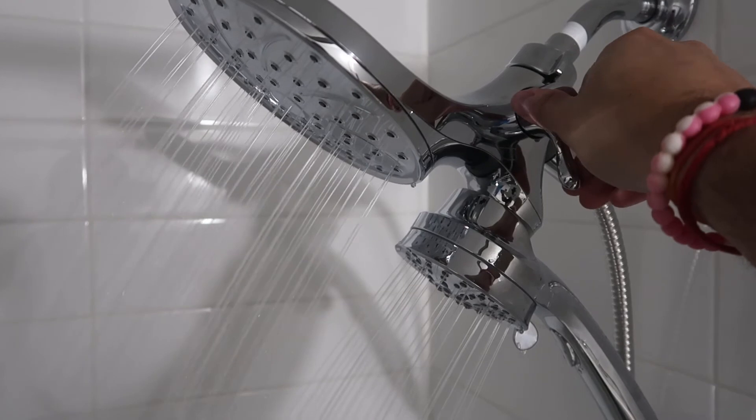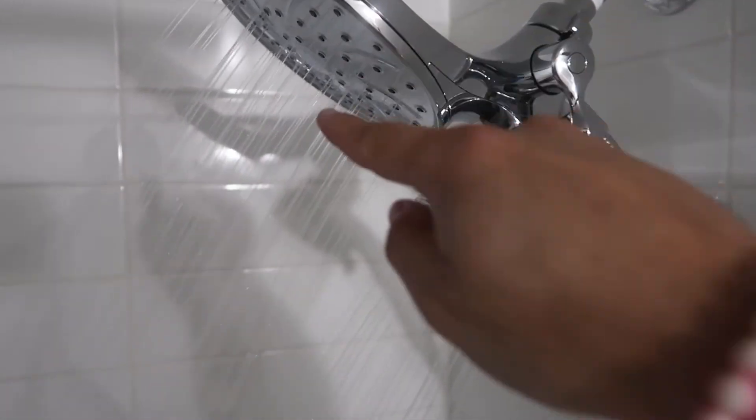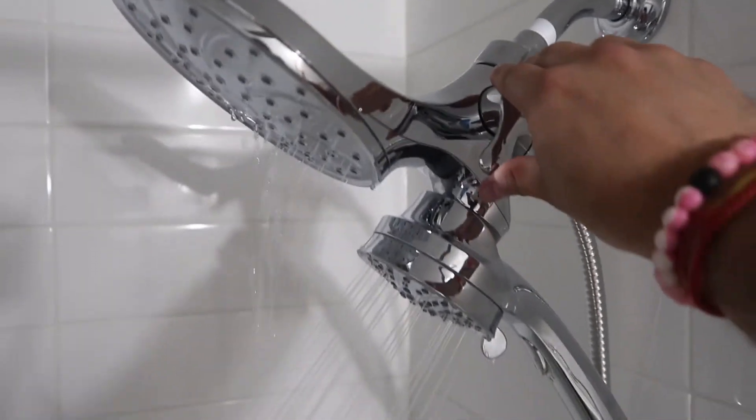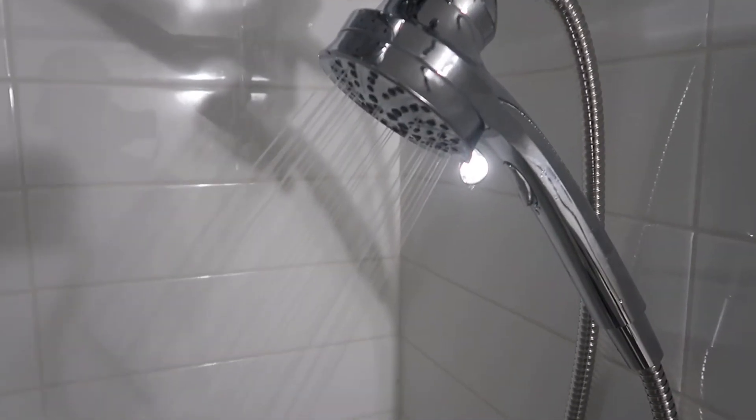This one does get a little bit lower pressure. Middle does both, and then if you go down it basically does just that bottom one. That still has a little bit of dripping to it, but once the water stops, then it will stop.